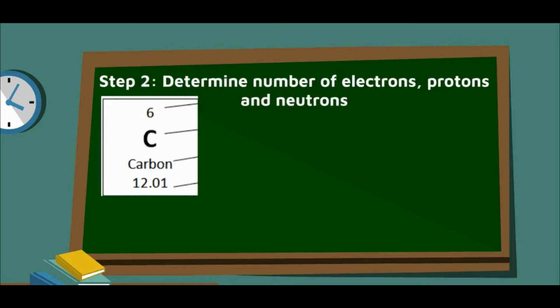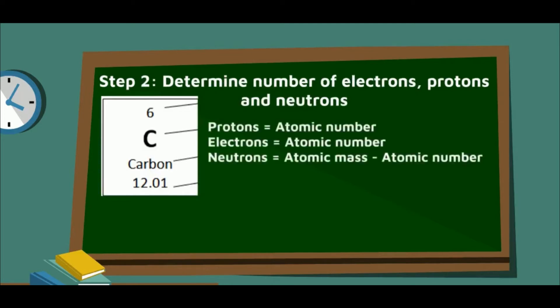To determine the number of electrons, protons, and neutrons, we use those three equations. Protons and electrons equal 6. Neutrons equal atomic mass rounded minus the atomic number, which is equal to 6.